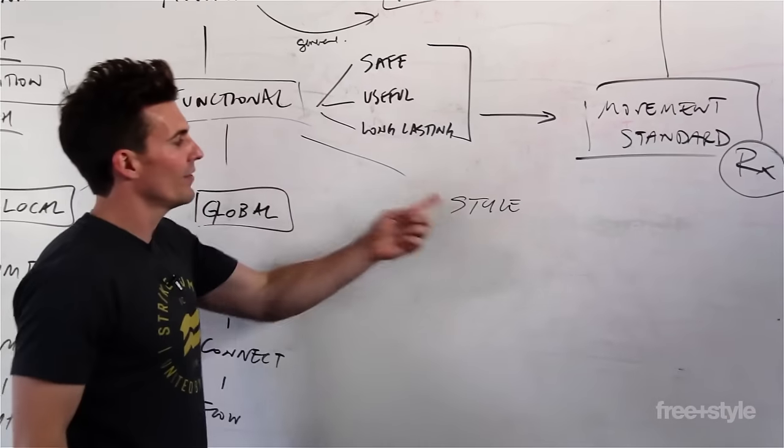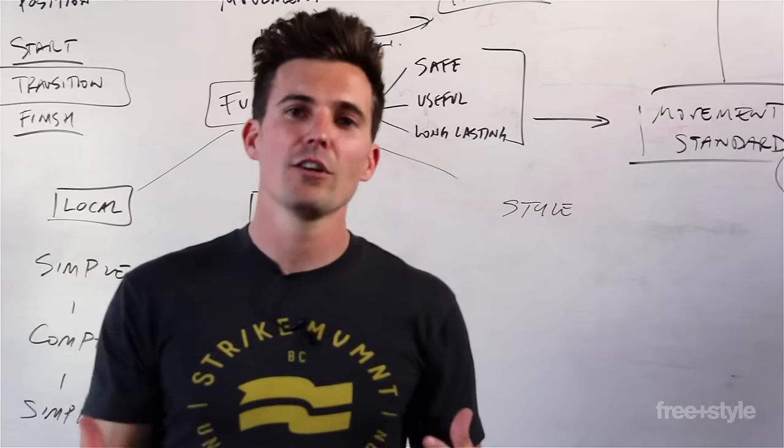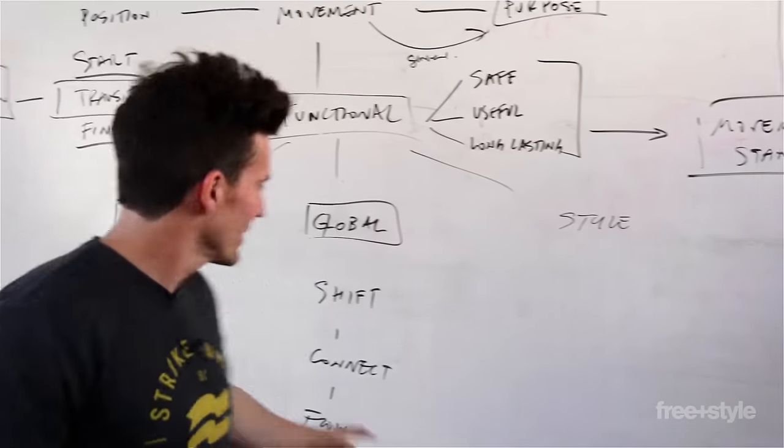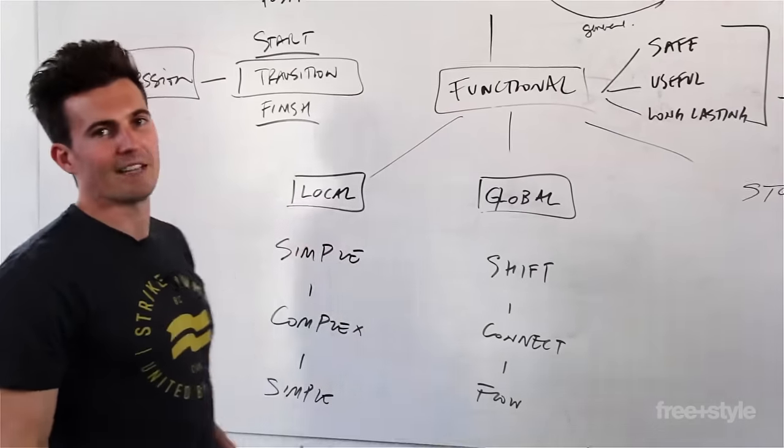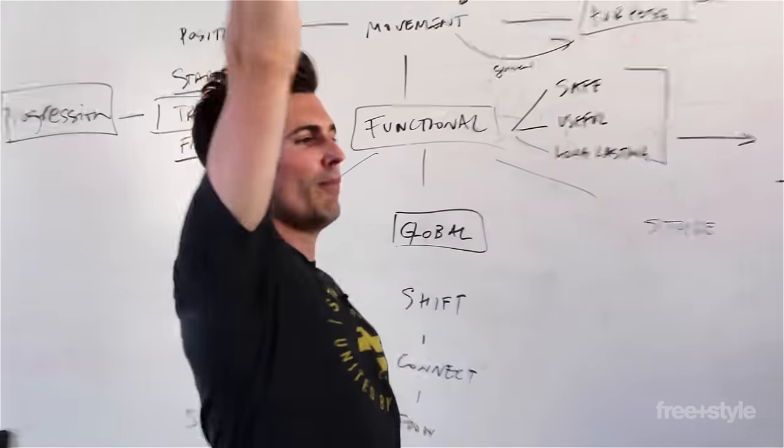And what is style? Well that's just what a movement looks like. I'll give you an example. Let's say we look at a movement from a local perspective, a pull-up, shoulder elbow pulling.